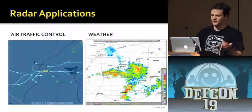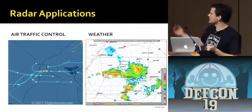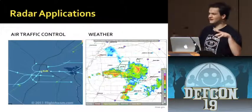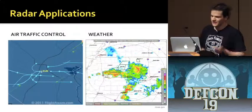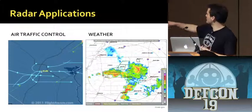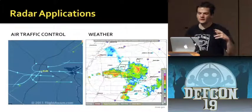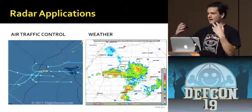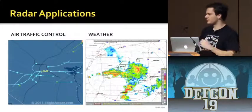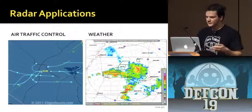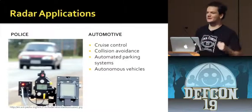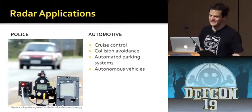Where is radar used? Pretty much everywhere. Air traffic control is a really big one — they use it for en-route tracking. This is a picture from a website where you can track flights live — here's Las Vegas a couple days ago. It's used for weather measurement — this is a Doppler radar image measuring the velocity of rain or hail, where the color indicates return strength and storm direction is determined by Doppler shift. Police use speed guns to give you tickets, which sucks.